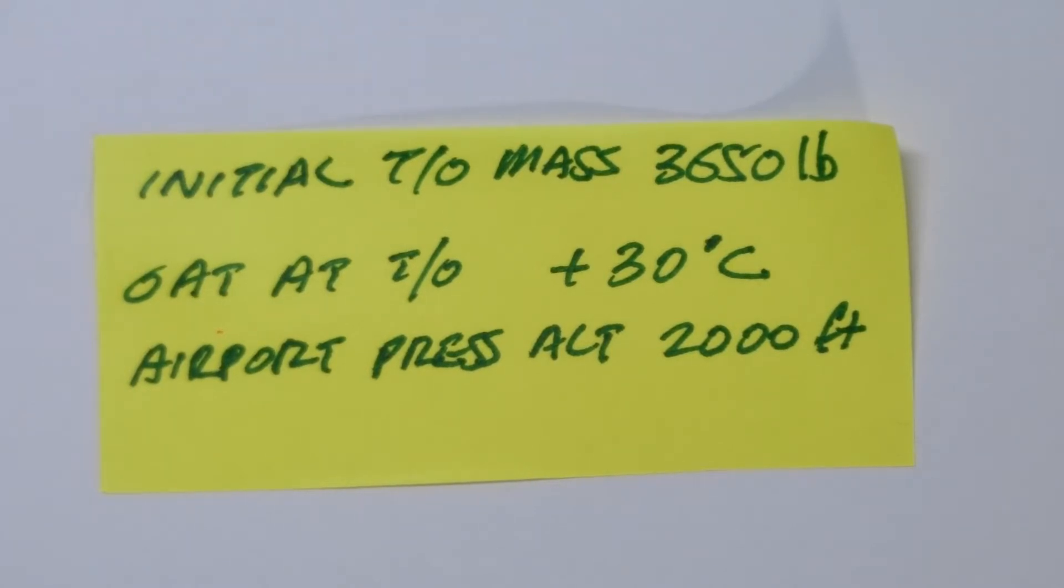Well, the answer is simple. We are going to find out what this time, fuel, and distance are. And later on, we are going to subtract this value from the example where we had taken off from mean sea level and climbed to a cruise pressure altitude of 10,000 feet.